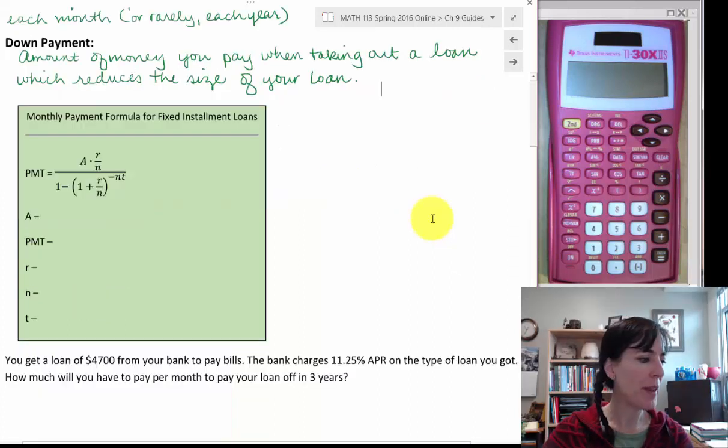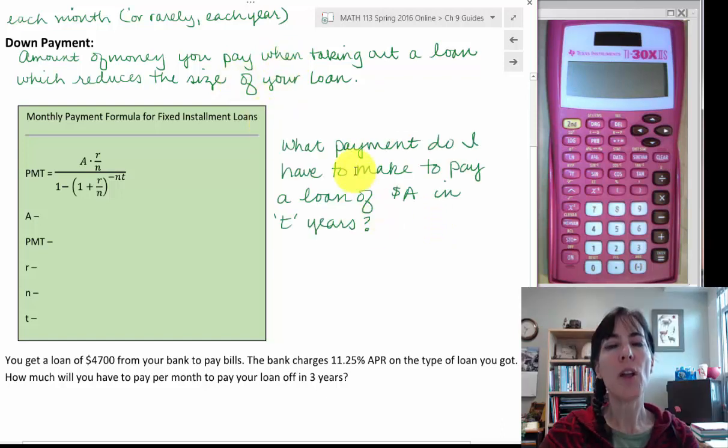We have a formula here and this formula answers a question. The question is, what payment do I have to make to pay a loan of A dollars in T years? So this one obviously is solved for the payment and you plug in all the information on the right. It looks sort of familiar, but we have a couple of things that are a little bit different. Particularly, we have a negative exponent here and then we have the A times R over N in the numerator.